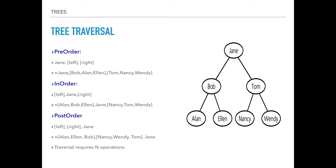Post-order traversal: visit everything before specifying the root. Go to the left subtree, take Alan, then Eileen (right of Bob), then Bob as the root. Then go to the right subtree: Nancy (left of Tom), then Wendy (right of Tom), then Tom as root. Finally, list Jane as the root last.